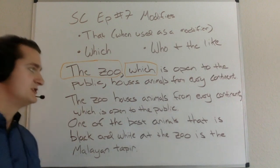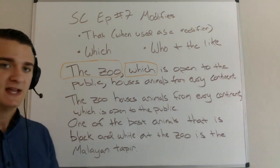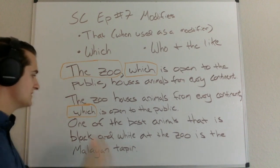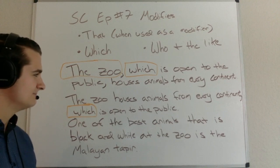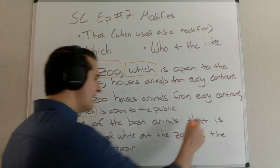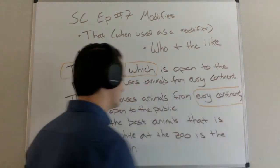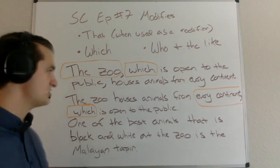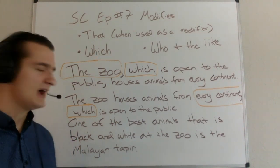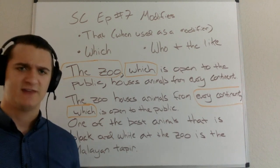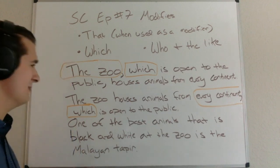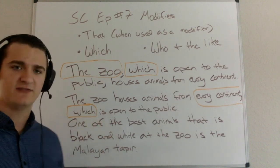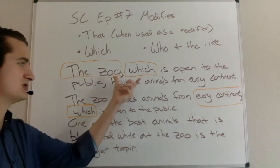The second example is: 'The zoo houses animals from every continent, which is open to the public.' Here again I notice the word 'which,' and I run into a little bit of confusion — because 'which is open to the public': what is open to the public? In this instance, it seems like 'every continent' is what I'm modifying. It seems like every continent is open to the public. But is that really a logical meaning for the sentence? I don't actually know that that would make sense.